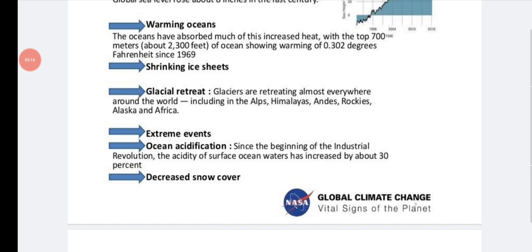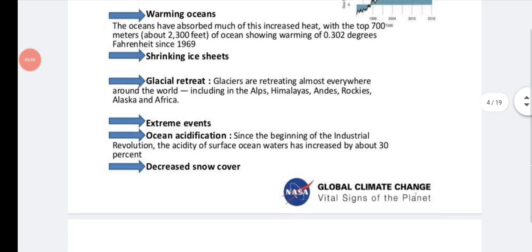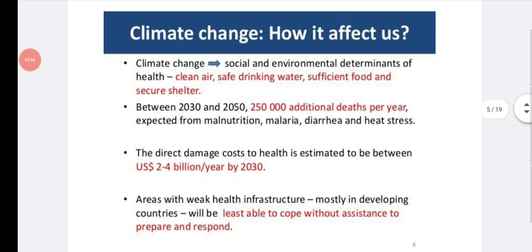Then extreme events like drought or floods and ocean acidification. Since the beginning of the industrial revolution, the acidity of surface ocean water has increased by about 30 percent. That's because whatever impurities or waste produced in the industry, they are releasing into the water bodies. So there was increased acidity or acidification of surface water of the ocean. There is decreased snow cover. Whenever you go to the hilly stations or mountain ranges, there is decreased snow cover in the recent years. That's because of global warming. So how this climate change affects us?